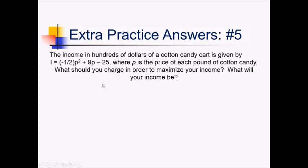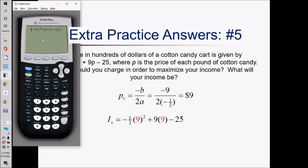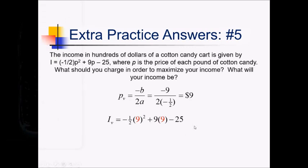The x-value is easier to find using negative b over 2a. So the p-value of the vertex equals negative 9 over 2 times the a-value of negative one-half. 2 times negative one-half is negative 1, and negative 9 over negative 1 is positive 9. So we should charge $9 per pound to maximize our income. Now, the actual income is what we get if we plug 9 in for p. Crunching those numbers on the calculator — using fraction mode for the one-half — we get 15.5. That's $15.50 for our income.